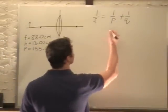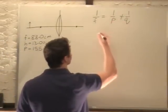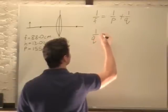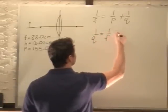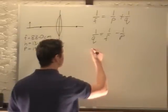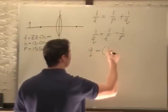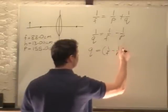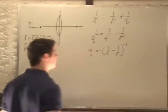So we'll solve for Q. We'll just subtract 1 over P to the other side, so we have 1 over Q equals 1 over F minus 1 over P. And if we do the reciprocal, Q equals the inverse of 1 over F minus 1 over P.